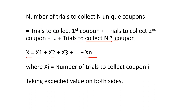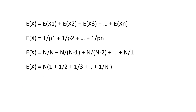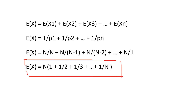So now we can take the expectation on both sides of this expression. The expected value of X equals the expected value of X1 plus expected value of X2, up till expected value of Xn. We know that the expected value of Xi is 1 over pi, where pi is the probability of success, and pi was n minus i minus 1 over n. Substituting pi for all expected values, the final answer is: expected value of X equals n times the quantity 1 plus 1 over 2 plus 1 over 3 up till 1 over n.